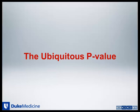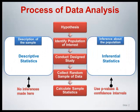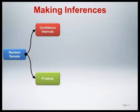The topic of this section is the ubiquitous p-value encountered in virtually every clinical research article and publication. Let's return to the process of data analysis slide from the introductory module to provide context. Our focus here is on making inferences about the population under study. The two primary inferential statistical tools used for making inferences are p-values and confidence intervals. We assume that we have a random sample of data and are interested in using both to answer questions about the population under study.